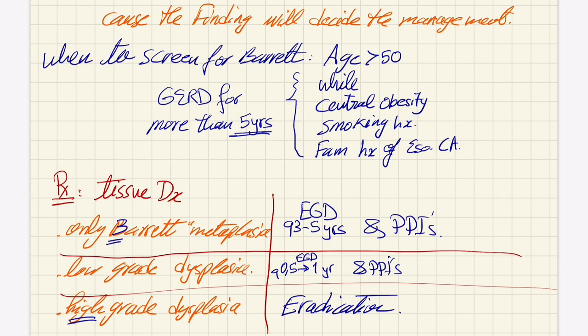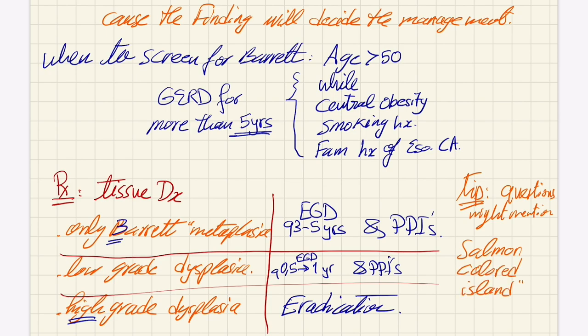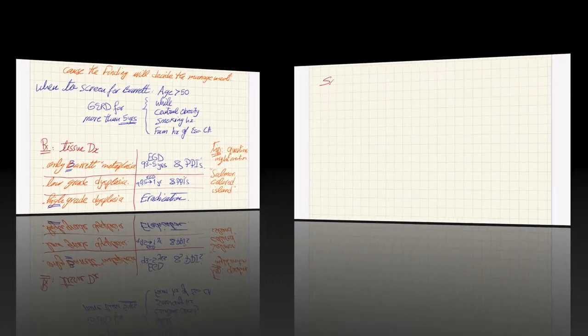We have to eradicate the tissue by burning it, laser photocoagulation, whatever option offers eradication. A tip: sometimes in questions they mention you see salmon-colored islands - they are referring to Barrett's esophagus. I recommend you see some Barrett's esophagus pictures on the internet to make sure you recognize these islands when you see questions with photos.